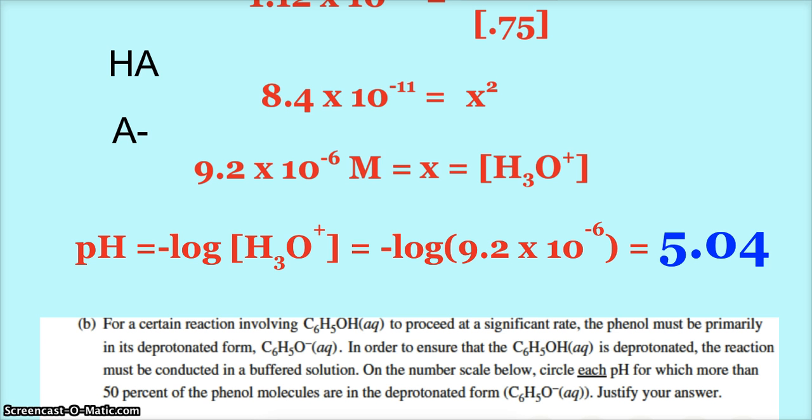So what we want is A minus because we want the hydrogen to be gone, deprotonated. If you remember the beginning of a titration or whatever with our buffer, it's mostly HA. When we reach the half equivalence point, HA and A minus equal each other.